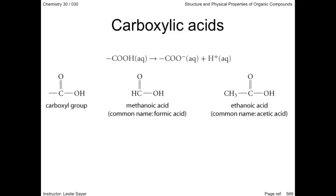The carbon in a carboxyl group is double-bonded to one of the oxygens and singly bonded to the other. A hydrogen atom is bonded to the other side of that oxygen. Since the carbon is part of the functional group, it is always at the end of a chain and always assigned carbon number one. Methanoic acid is the simplest carboxylic acid — it is the venom of bee and ant stings. In fact, the word formic, from its common name formic acid, is derived from the Latin word formica, meaning ant. Methanoic acid can be produced commercially as a preservative and as an antibacterial agent in livestock feed.